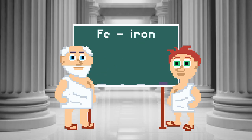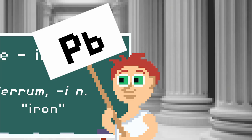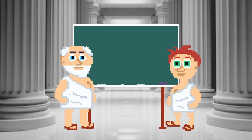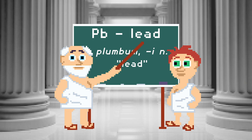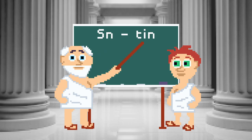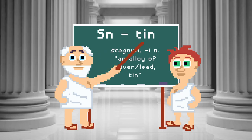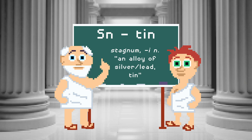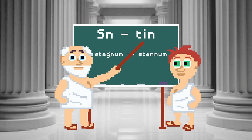Iron — comes from Latin. Ferrum means iron. Lead — comes from Latin. Plumbum means lead. Tin — comes from Latin. Stannum referred to an alloy of silver and lead, and later tin. A scribal error led to the later spelling of stannum.